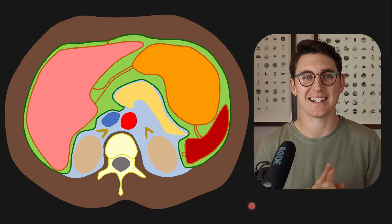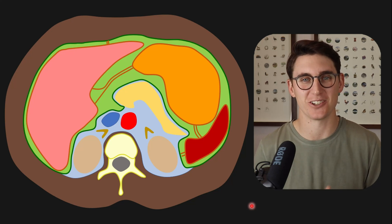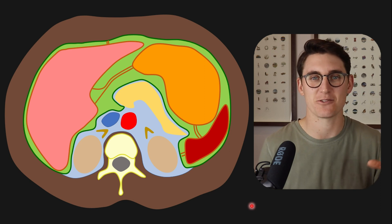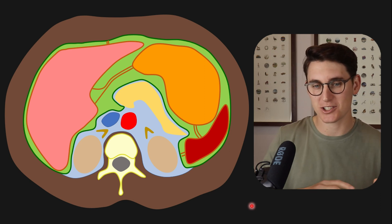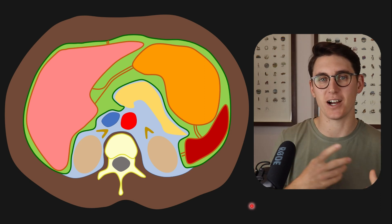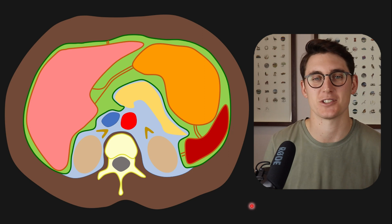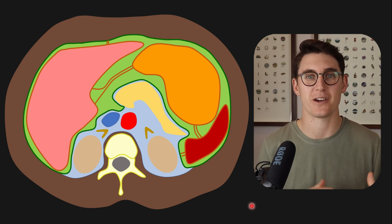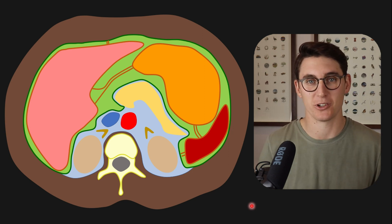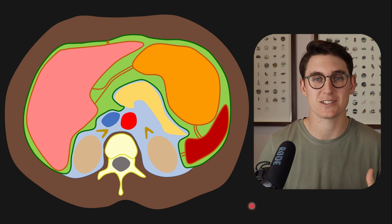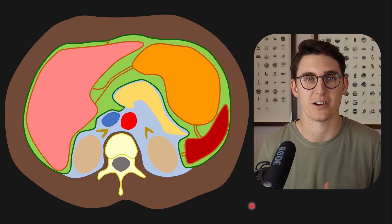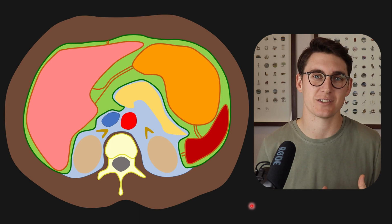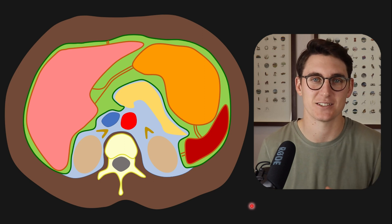Hello everybody and welcome back to another anatomy tutorial. Last week we looked at the peritoneal cavity and the organs that fill it, as well as how to divide it into various different spaces. This week we're going to look at the retroperitoneum. I'm going to show you how to identify the organs that fill the retroperitoneum, as well as how to divide it into three distinct spaces.